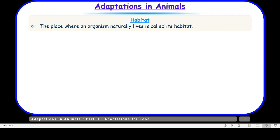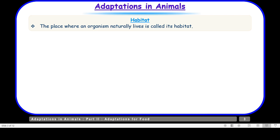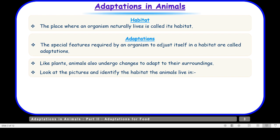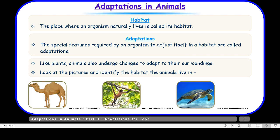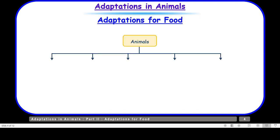Let us quickly recall the terms we are going to use. Habitat is the place where an organism naturally lives. Adaptations are special features required by an organism to adjust itself in a habitat. Like plants, animals also undergo changes to adapt to their surroundings. For example, a camel is a desert animal, a monkey lives in forests, and turtles are found in the sea.